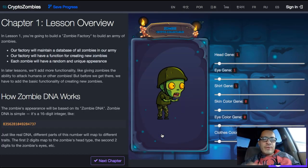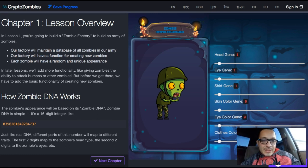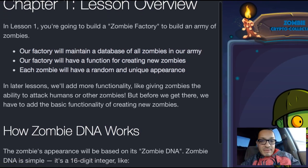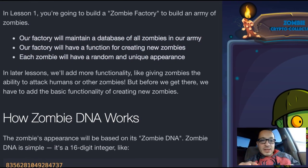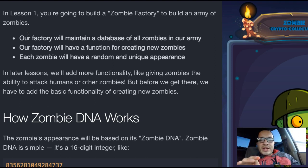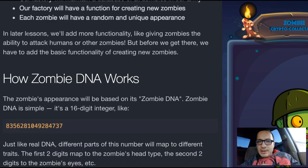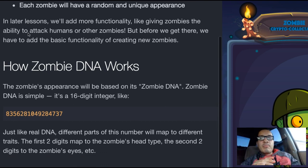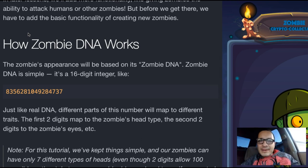Chapter one is a lesson overview. In lesson one, you're going to build a zombie factory to build an army of zombies. Our factory will maintain a database of all zombies in our army, and it will have a function for creating new zombies. Each zombie will have a random and unique appearance. In later lessons, we'll add functionality like giving zombies the ability to attack humans or other zombies.